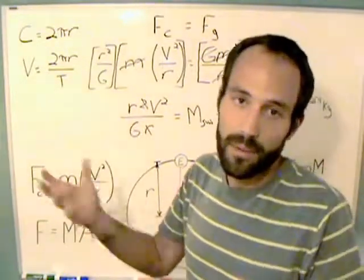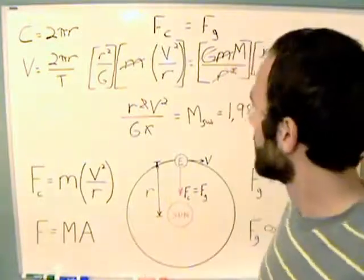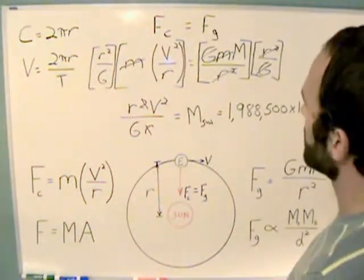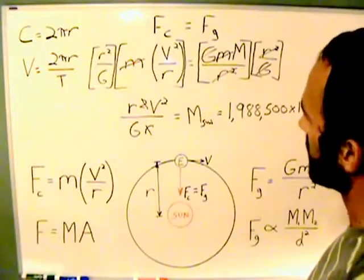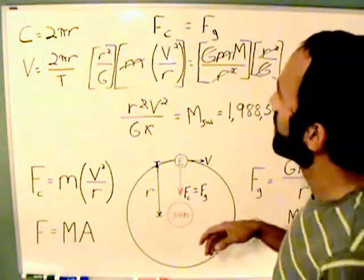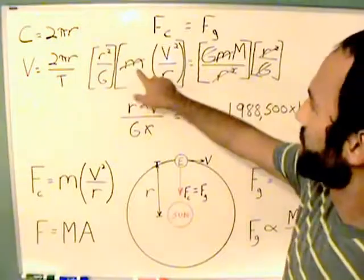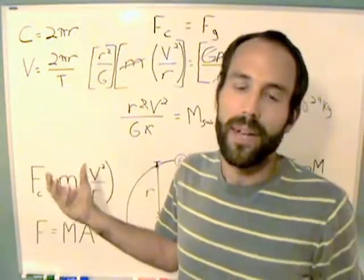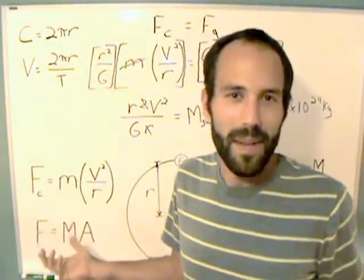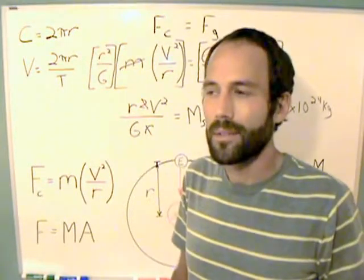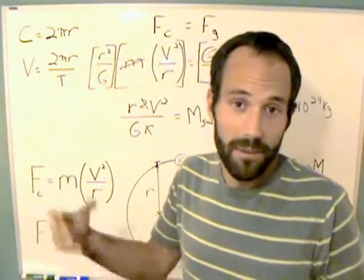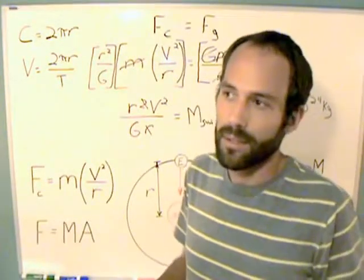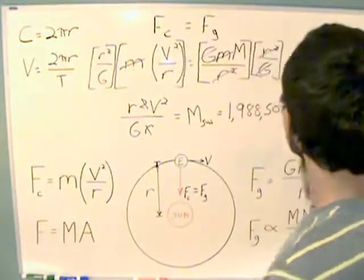So they calculated the mass of the Sun. But as you saw in the example, the mass of the Earth that's orbiting the Sun cancels. The first time I did this I got a little excited, thinking I'd get to calculate the mass of Jupiter and Mars. But the mass of whatever's orbiting the Sun just cancels out. It doesn't matter.